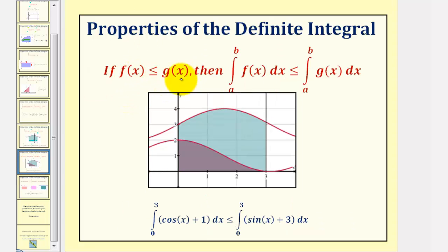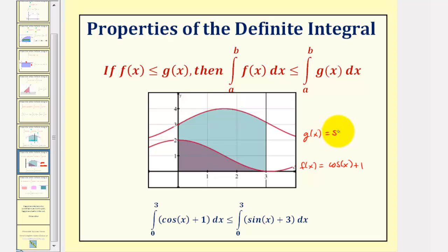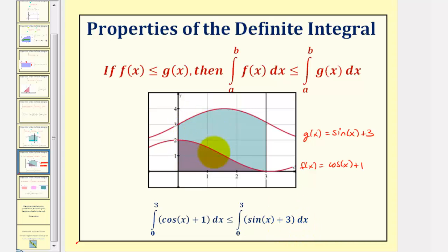Next, if f of x is less than or equal to g of x, then the integral of f of x from a to b will be less than or equal to the integral of g of x from a to b. As an example, f of x equals cosine x plus one and g of x equals sine x plus three. Since f of x is always less than or equal to g of x, the integral of cosine x plus one from zero to three is less than or equal to the integral of sine x plus three from zero to three. Because both functions are non-negative, this integral equals the area of the darker shaded region, and this integral equals the area of the combined shaded regions.